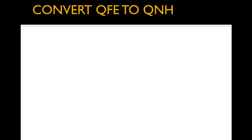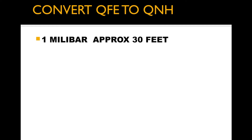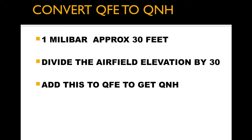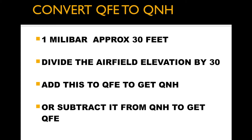Now coming on to the conversion of QFV to QNH. First of all we consider one millibar is approximately equal to 30 feet. Now divide the airfield elevation by 30, and add this to QFV to get the QNH. If you have QNH with you, then you subtract it from QNH to get QFV.